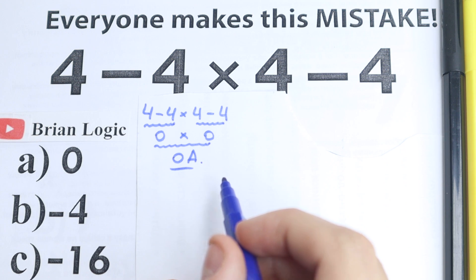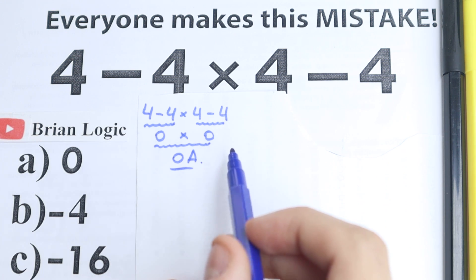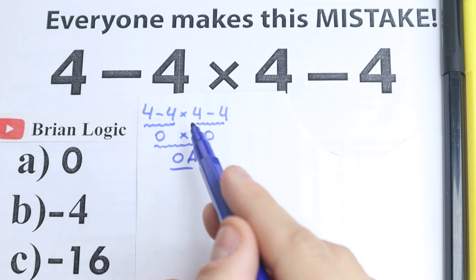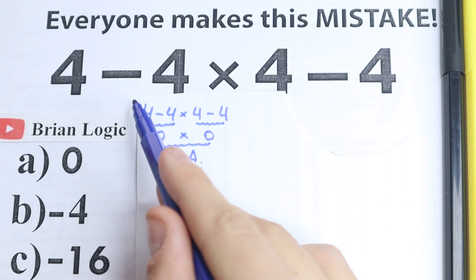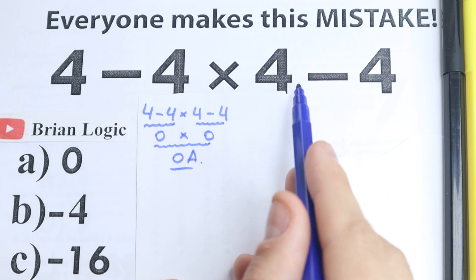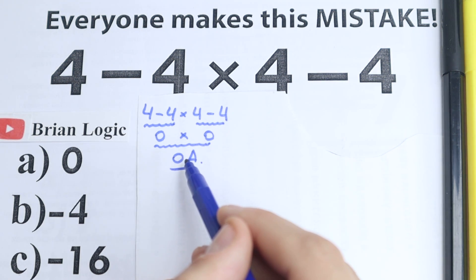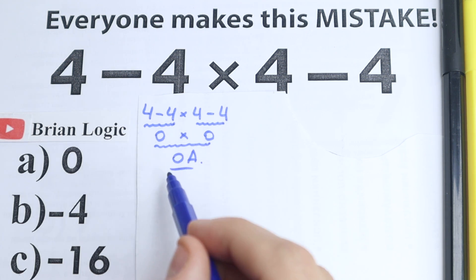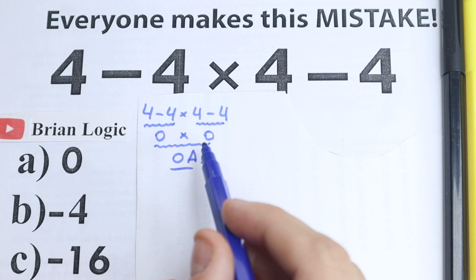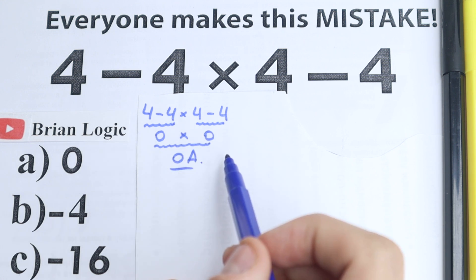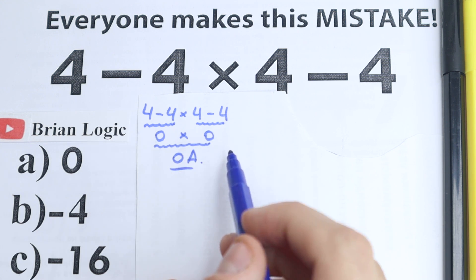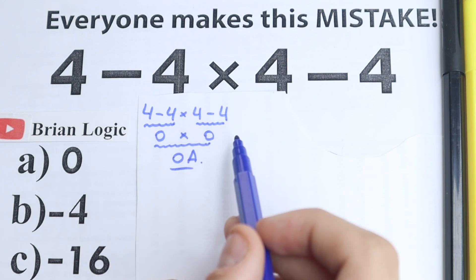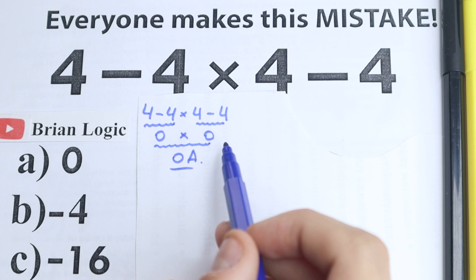I want to say that in math you need to know the correct order of operations to solve this problem. Because this solution looks like you're solving it however you want — you subtract first on the right-hand side and get 0. I don't want to say it's correct or incorrect yet; I want you to understand there is one and only one correct order of operations.